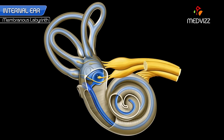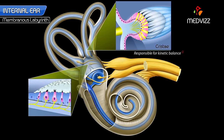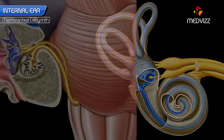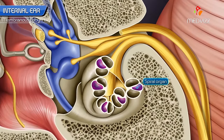The sensations from cristae, responsible for kinetic balance, and maculae, responsible for static balance, are carried by the vestibular nerve, while the sensations of hearing from the spiral organ are carried by the cochlear nerve.